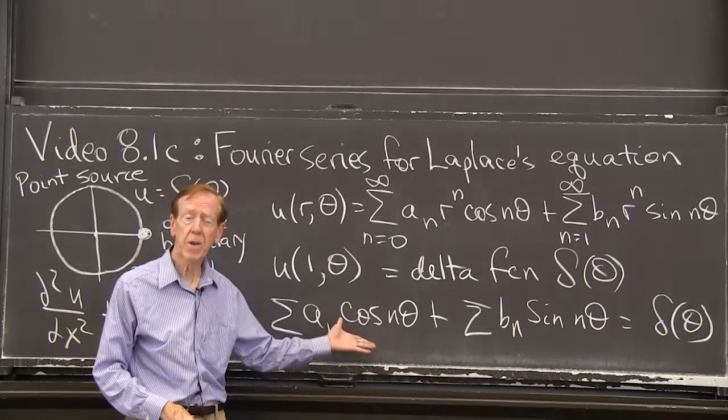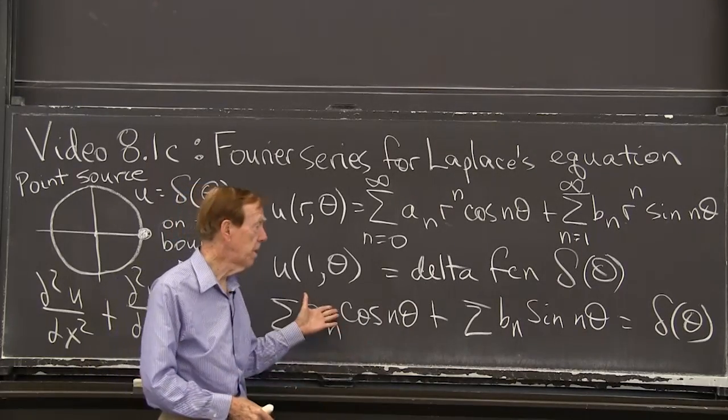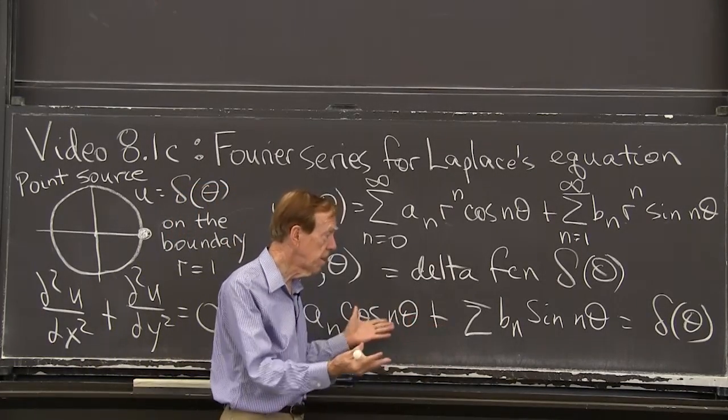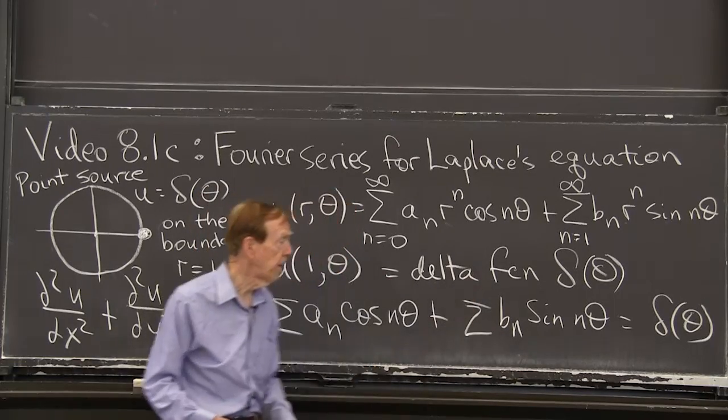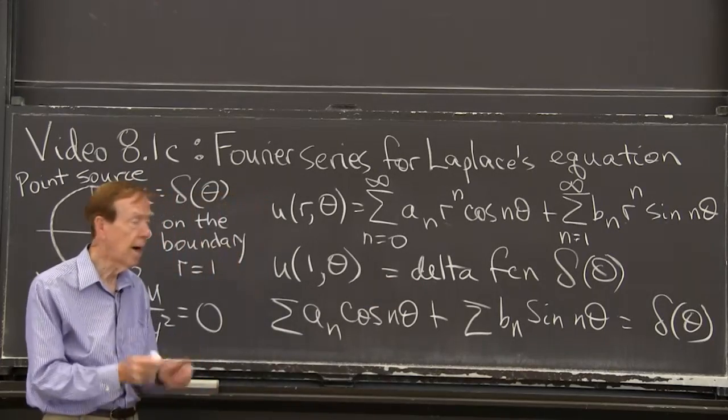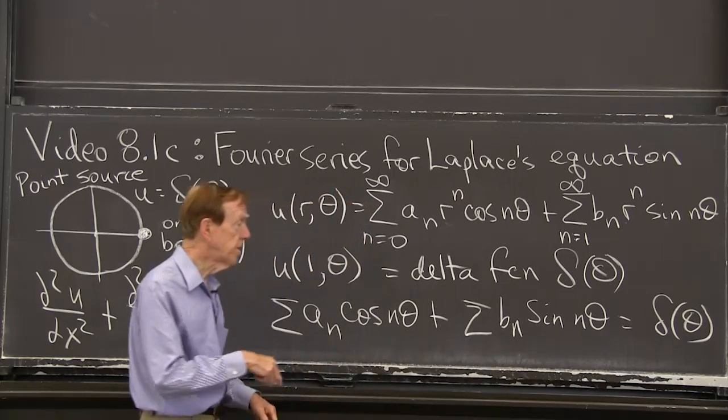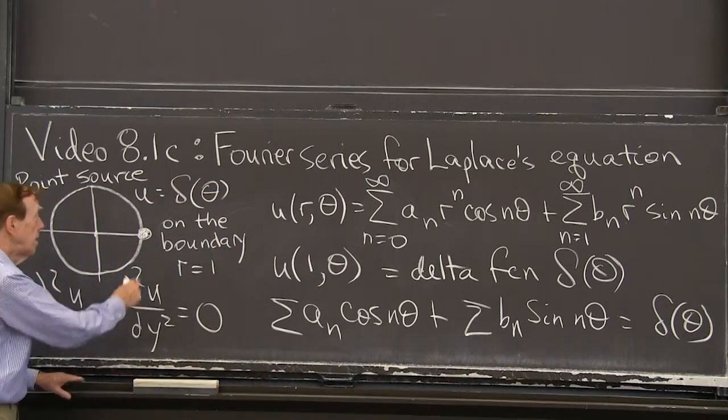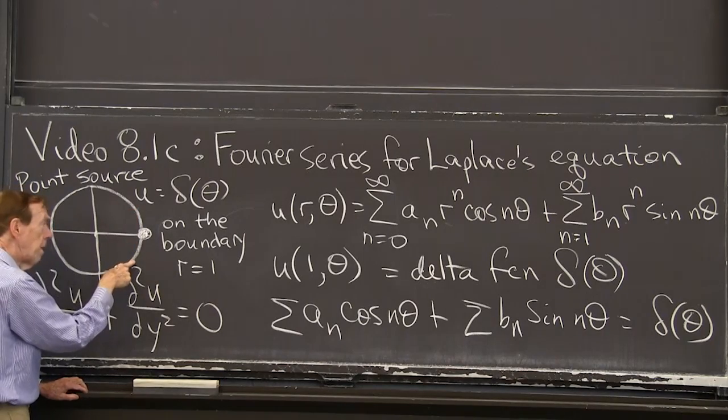So that's the Fourier series for the delta function. That's the whole point. That we use a Fourier series expression for the boundary function. Whatever that boundary function is. Here it's a particularly nice, neat one. And actually, the delta function is an even function. It's 0 at theta and it's 0 at minus theta.